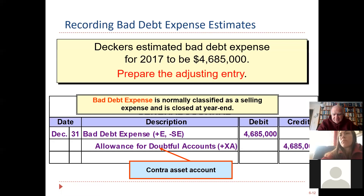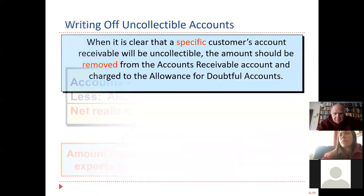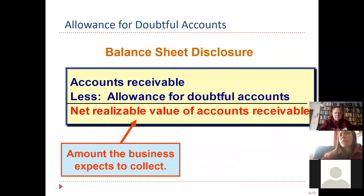In this part of the chapter, there are only two two-line journal entries we need to master, and this is the first one — we think $4,685,000 will never come our way. Whenever there is a contra account, whether it's a contra asset, contra revenue, or contra whatever, it is always married to somebody and they get netted together.